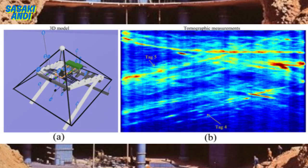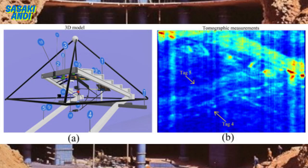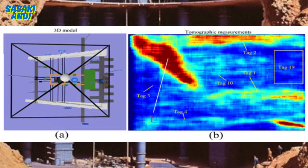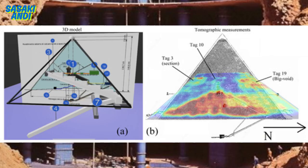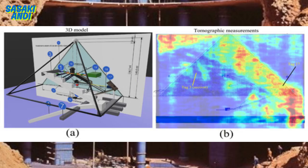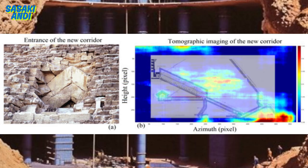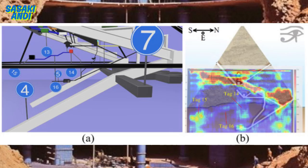That really gives a lot of credibility to these new findings. Absolutely. Being able to accurately map those known features really validates the technology and gives us confidence that these new discoveries are real and significant. So we've seen the evidence, this intricate web of ramps, corridors, voids, and underground complexes. What does it all mean? How does this change our understanding of the Great Pyramid and its purpose?